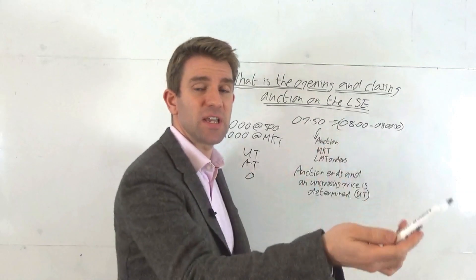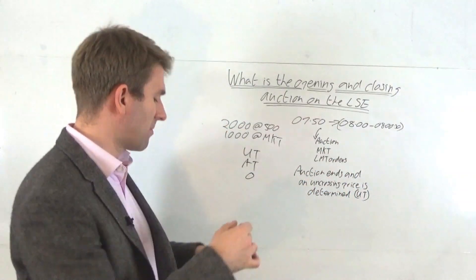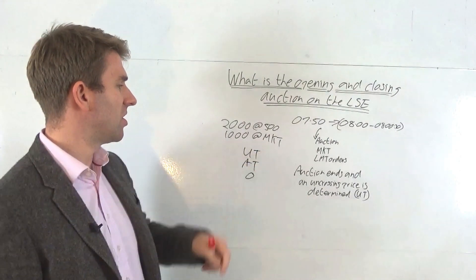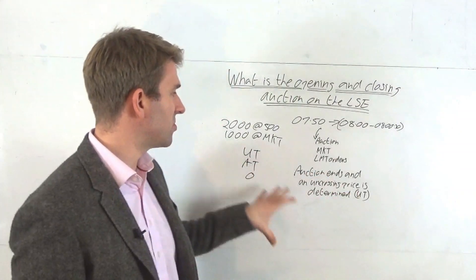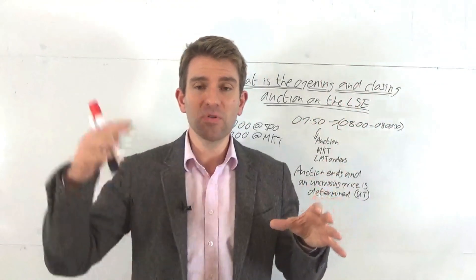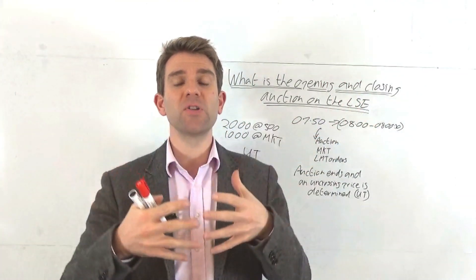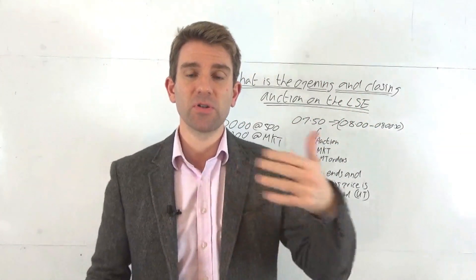AT is automatic traders - someone's taking the offer or the bid. O is a broker trade. UT is the uncrossing trade. The uncrossing price takes in all the buyers, all the sellers, the market orders, the limit orders, works out what the middle price would be - that's your uncrossing price.